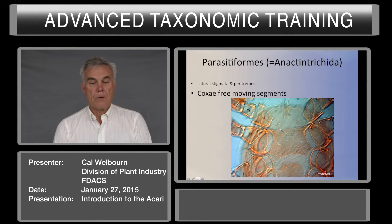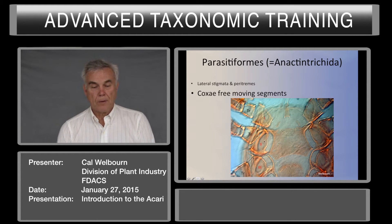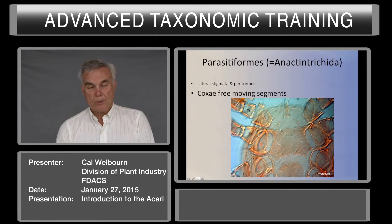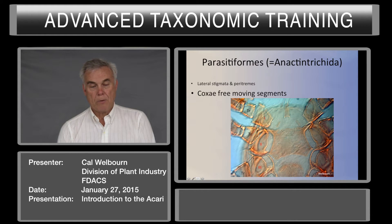Free-moving coxal segments. This figure shows coxal fields legs 1, 2, and 3. You can see here that each coxal segment is a discrete segment — it is a movable segment followed by the trochanter.